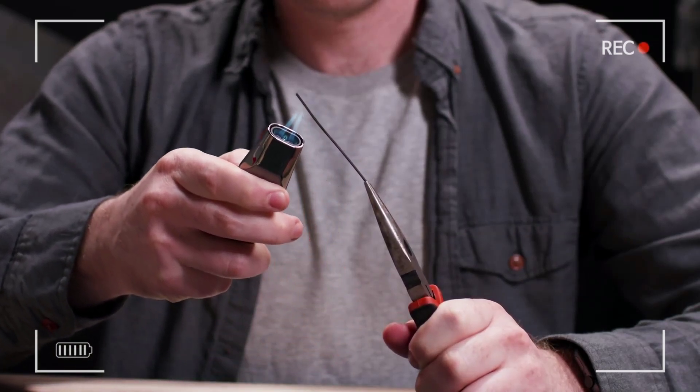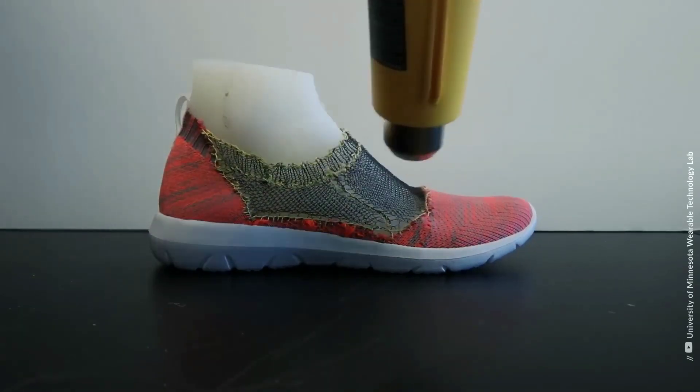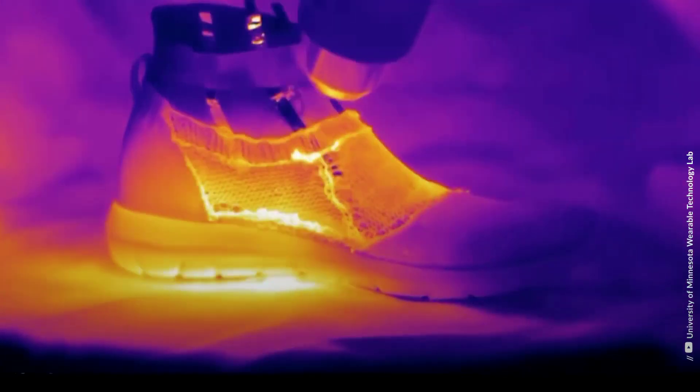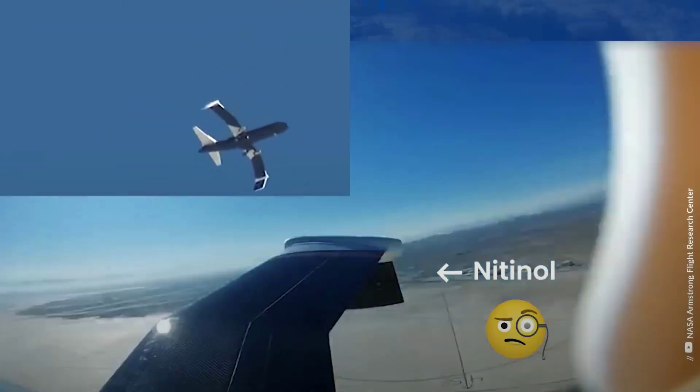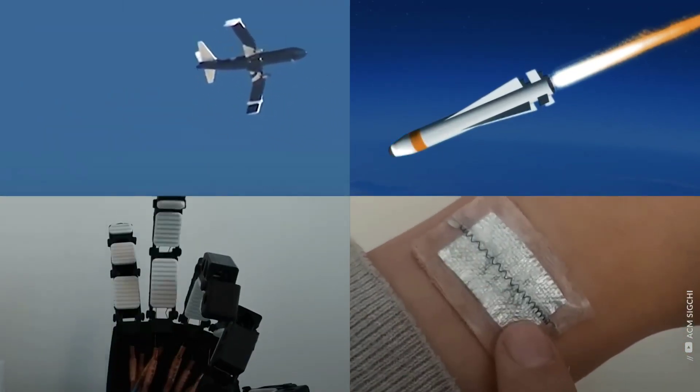Manufacturing Process Development: Develop manufacturing processes for producing memory metals at scale, including casting, forging, and extrusion techniques. Ensure quality control in the manufacturing process to maintain the consistency of material properties.